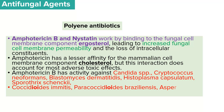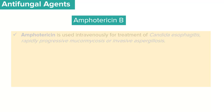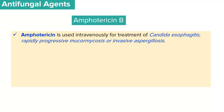Coccidioides immitis, paracoccidioides brasiliensis, and aspergillus species together with penicillium marneffei are also sensitive to amphotericin B. Amphotericin B is administered as an intravenous infusion for the treatment of candida esophagitis, rapidly progressing mucormycosis, or invasive aspergillosis, because it has poor absorption from the GI tract.